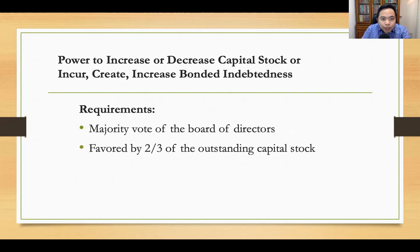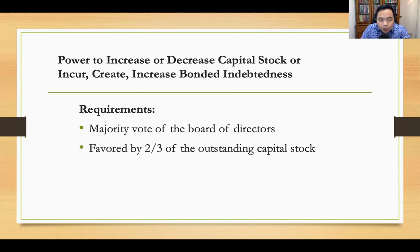The corporation can also increase or decrease its capital stock, and can incur, create, or increase bonded indebtedness. Increasing or decreasing capital stock is self-explanatory — you add to or subtract from the authorized capital stock. Bonded indebtedness means the corporation takes out a loan whose repayment is secured by a corporate property or asset.